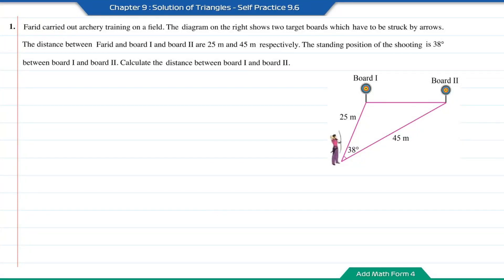Self-practice 9.6, question 1. Farid carried out archery training on the field. The diagram on the right shows two target boards which have to be struck by arrows. The distance between Farid and board 1 and board 2 are 25 meters and 45 meters respectively. The standing position of the shooting is 38 degrees between board 1 and board 2. Calculate the distance between board 1 and board 2.